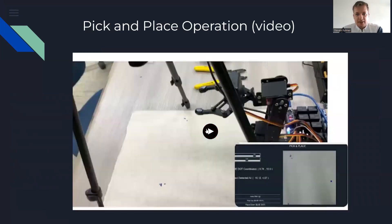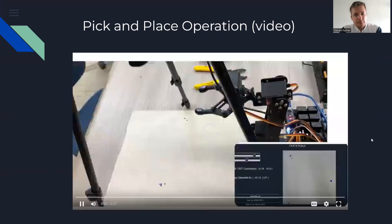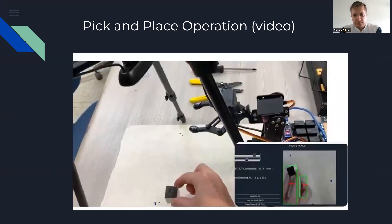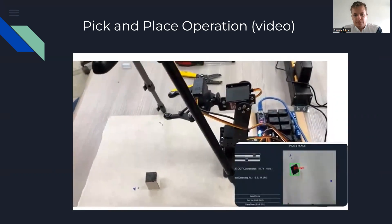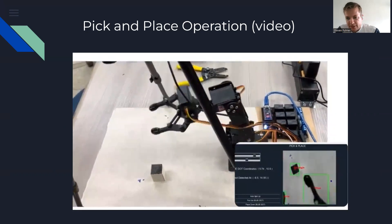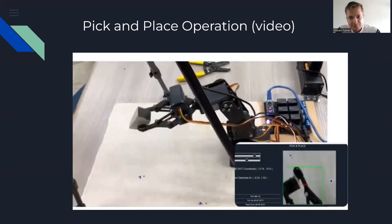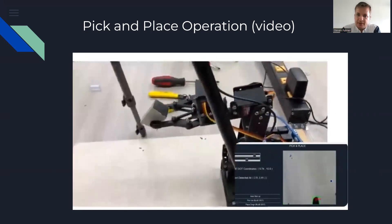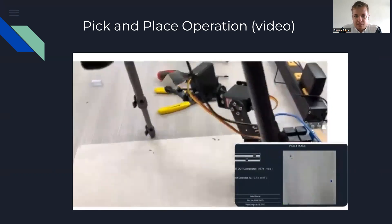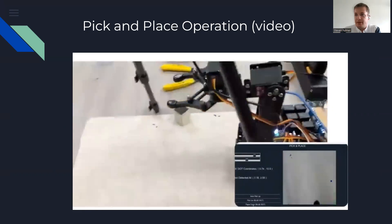This is a demonstration of the system in operation. You can see the robot noticing the rectangle, figuring out the centroid or center point, grasping it exactly as needed, and then placing it to the side. It then returns back to its home position.